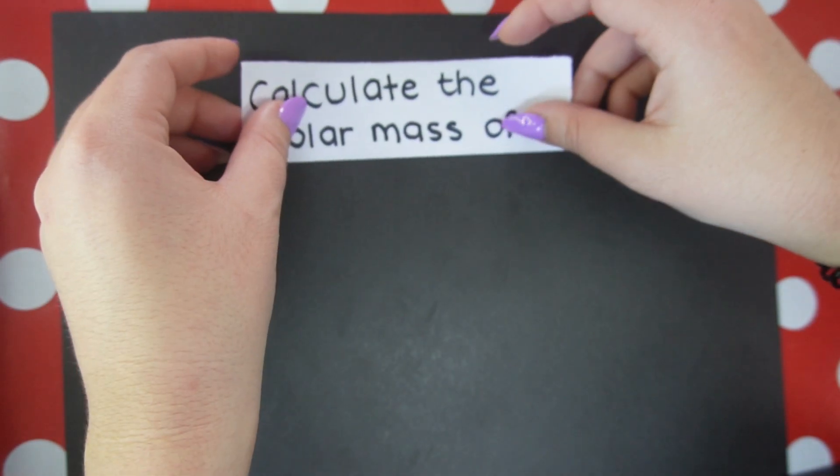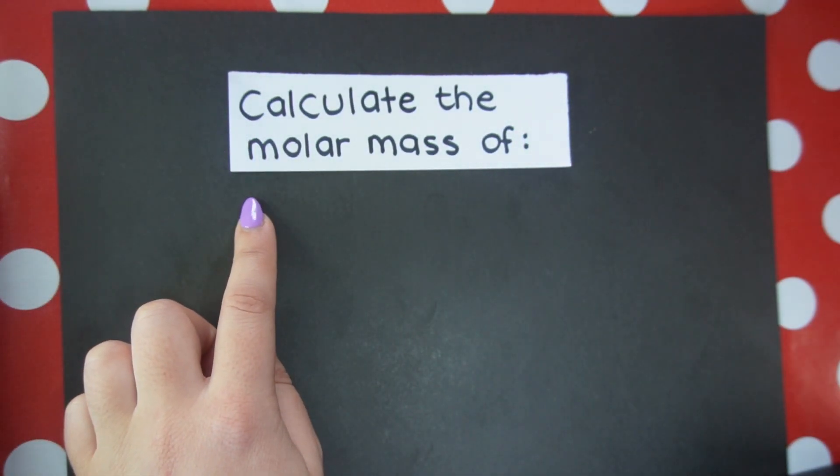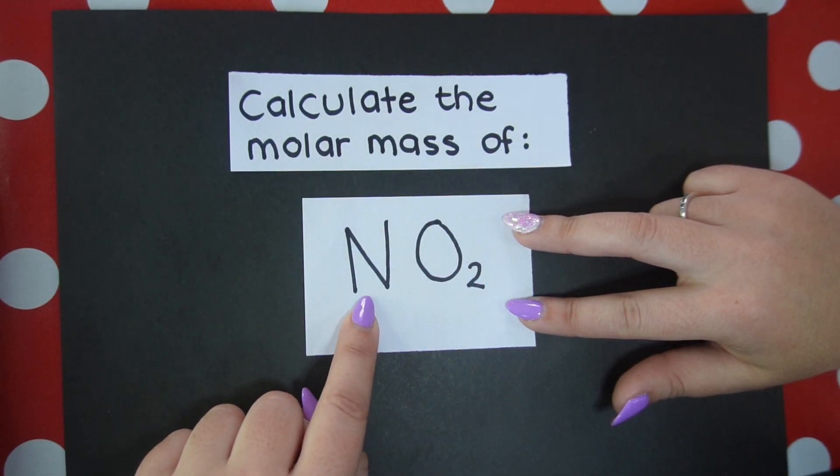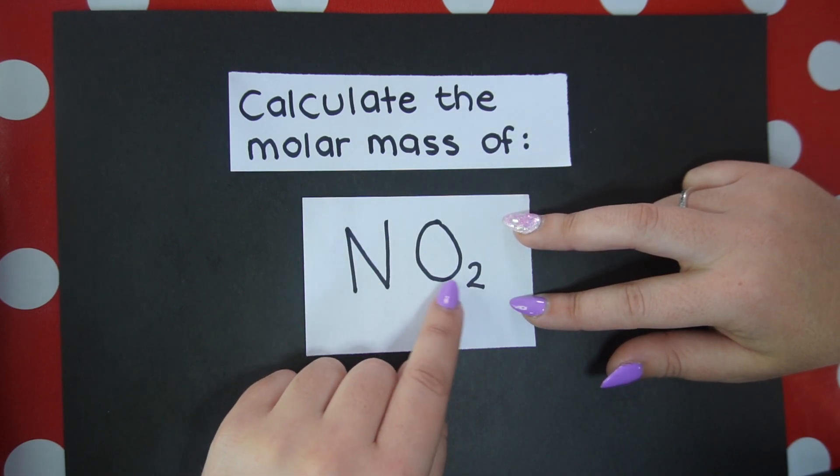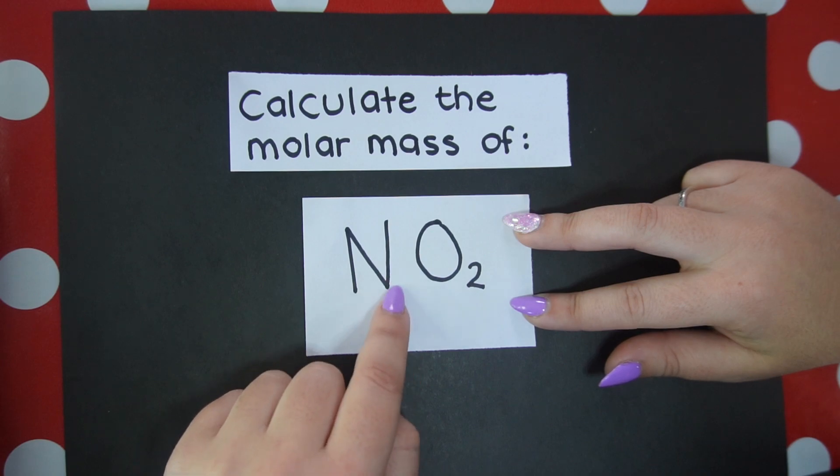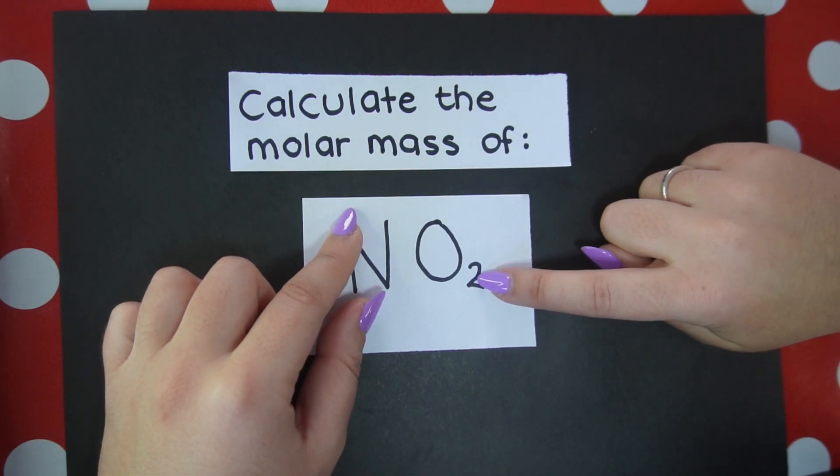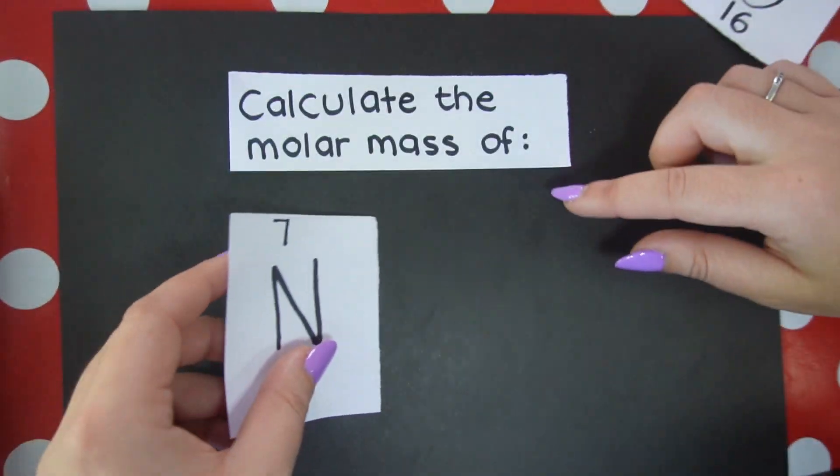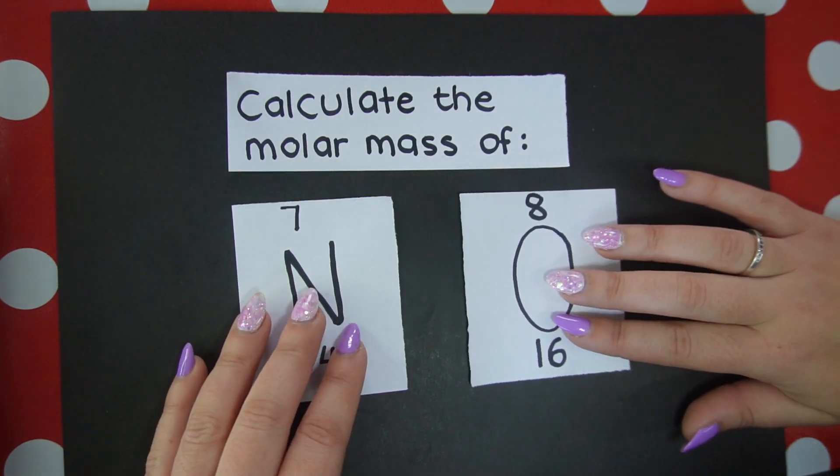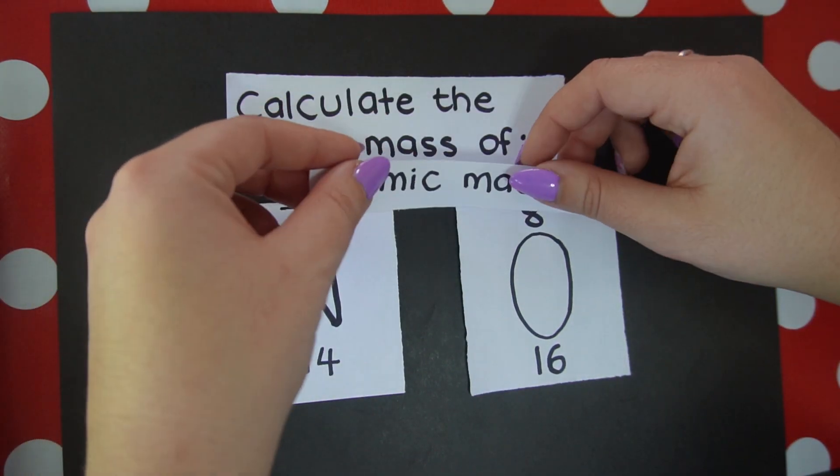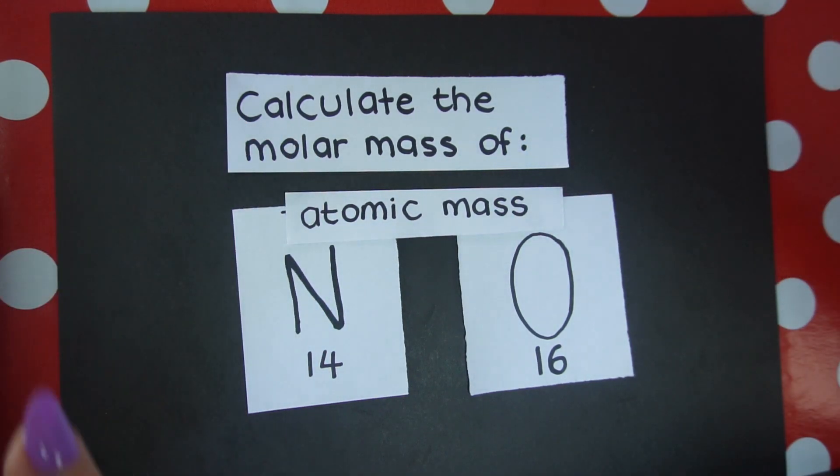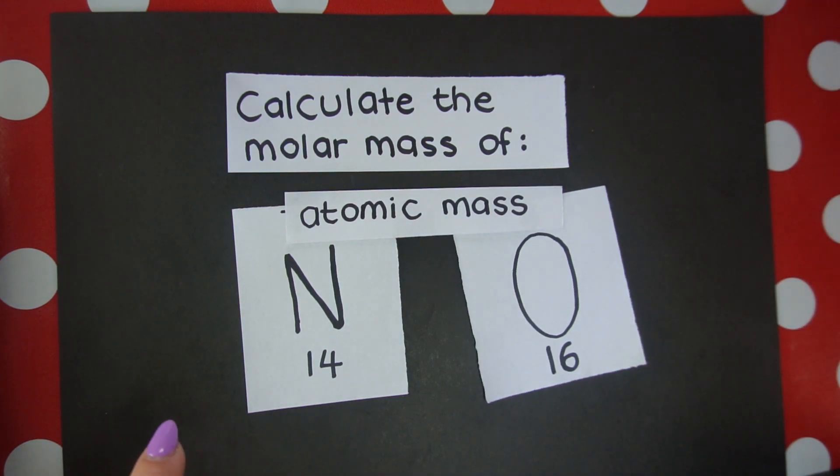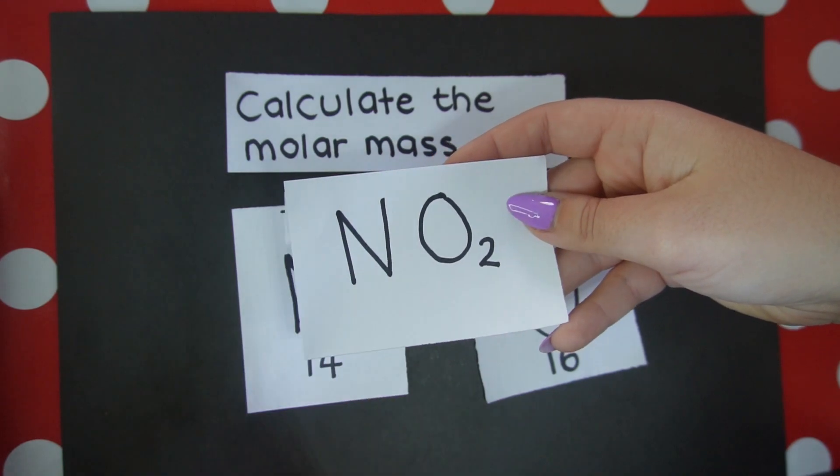For example, if my question says calculate the molar mass of nitrogen dioxide, within this compound we have one atom of nitrogen and two oxygen atoms. You see that there is no subscript here which means we have one nitrogen atom. There's a little baby two over here which means I have two oxygens. We've got nitrogen and we've got oxygen. We add up the atomic masses.